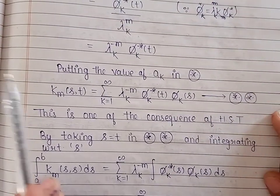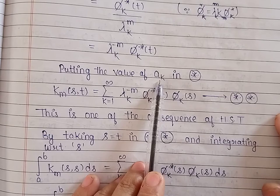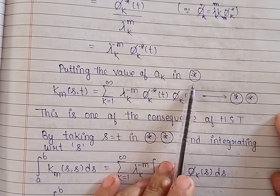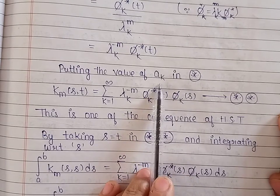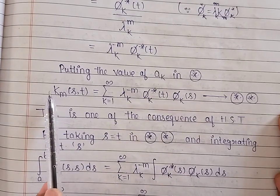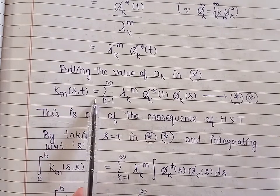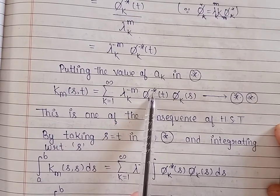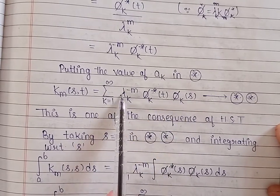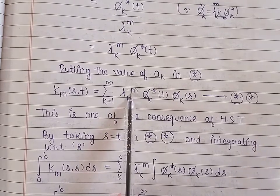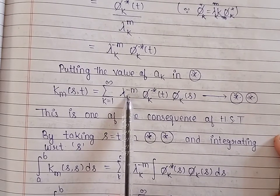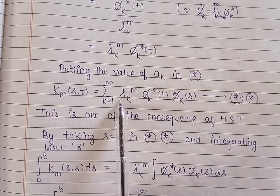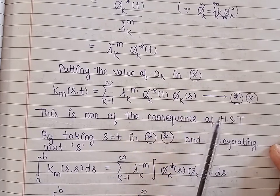Now we substitute the values of the Fourier coefficients into the Fourier series. Substituting, we get the m-th iterative kernel in the form: summation where k varies from 1 to infinity of phi_k conjugate(t) times phi_k(s) times lambda_k raised to the power minus m. This is the bilinear form, analogous to what we already obtained for the symmetric kernel K. This is one consequence of the Hilbert-Schmidt theorem.